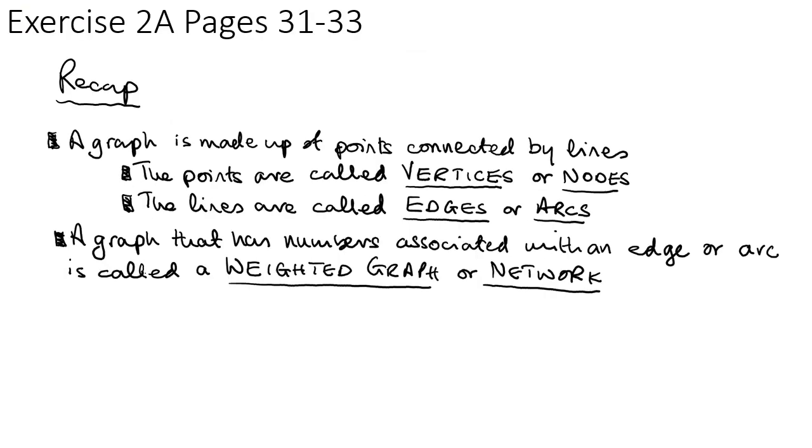So you should now be able to do exercise 2A on pages 31 to 32, and recap just of the definition of a graph, the names that we give to the points, the names that we give to the lines, and if we have numbers associated with the edges or arcs, we can call it a weighted graph or a network.